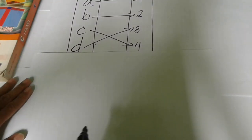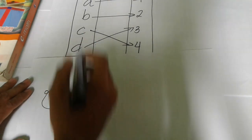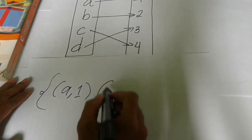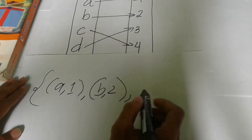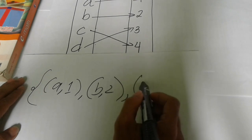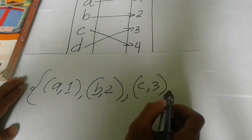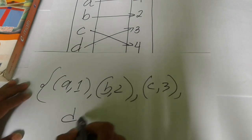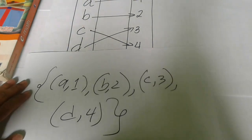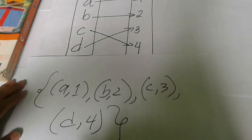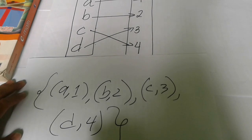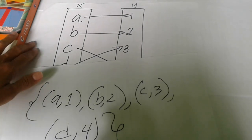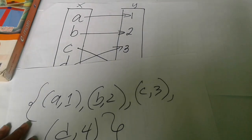In ordered pair form, the one-to-one relation can be written as: (A, 1), (B, 2), (C, 3), (D, 4). The domain is always X, which is our domain, and Y is the codomain or what we call the range.